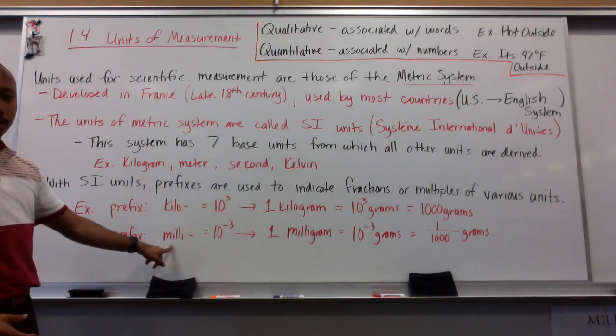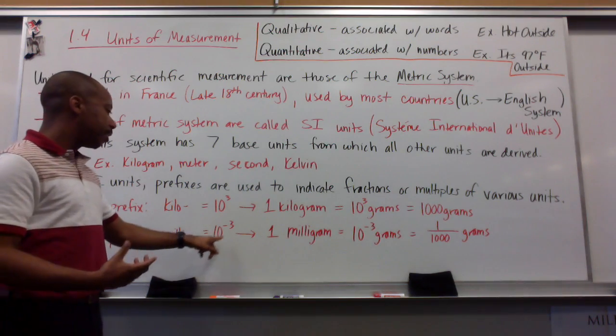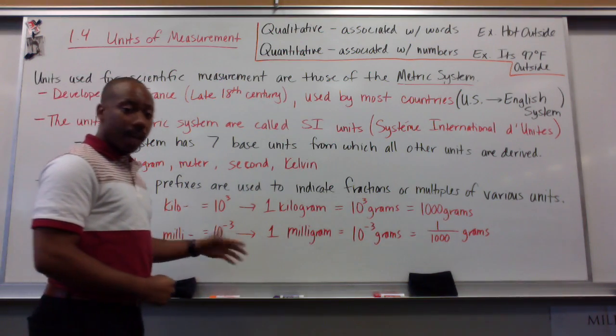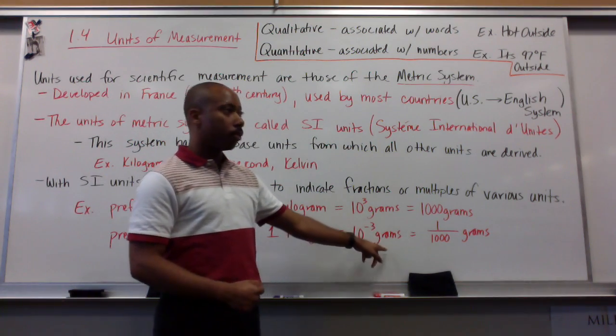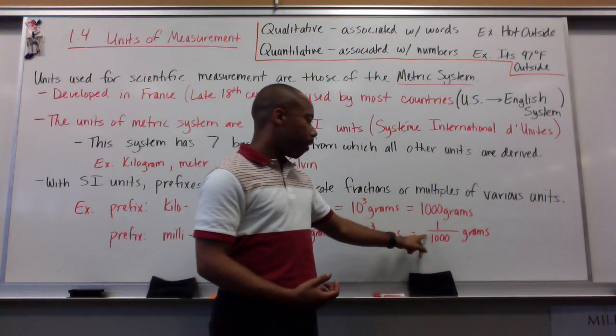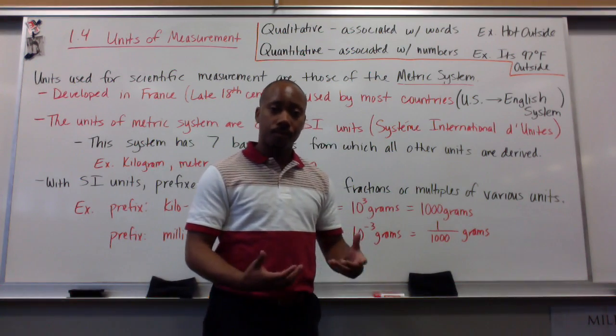Another example will be milli. I've heard of millimeters or milliliters. Milli is ten to the negative third. For example, one milligram is equal to ten to the negative third grams, or one divided by one thousand grams. Simple enough.